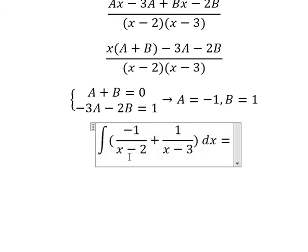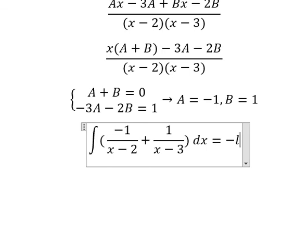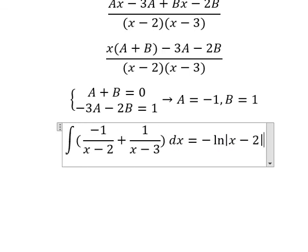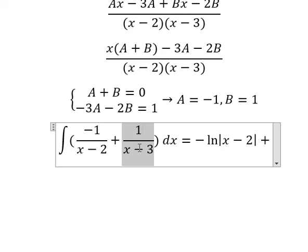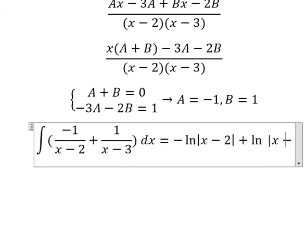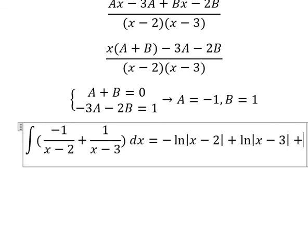final answer. The integration of negative 1 over x minus 2 plus 1 over x minus 3, you got negative ln of the absolute value of x minus 2, the integration of this one we have ln of the absolute value of x minus 3, and we put C.